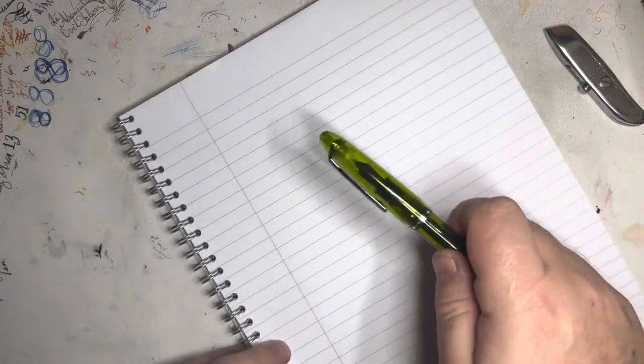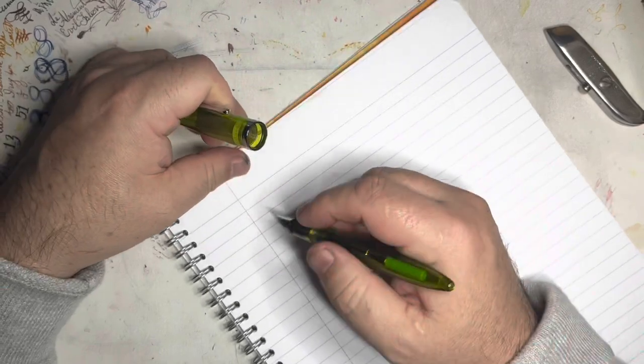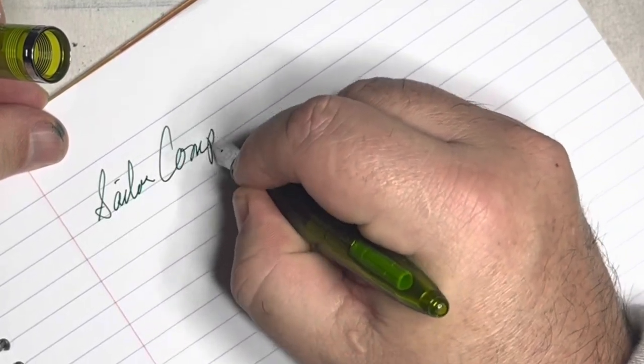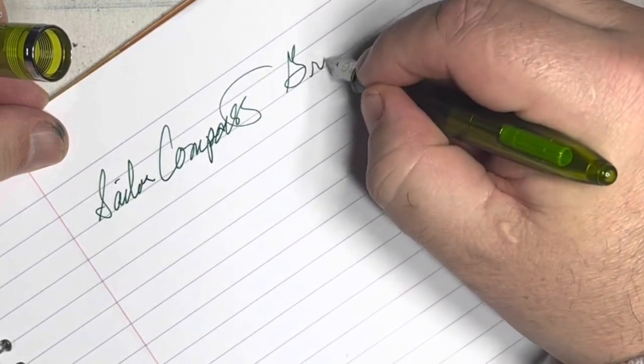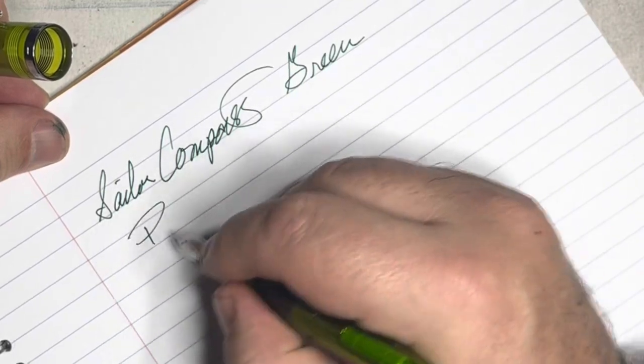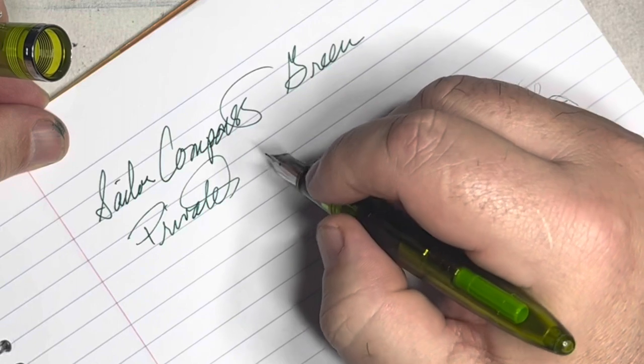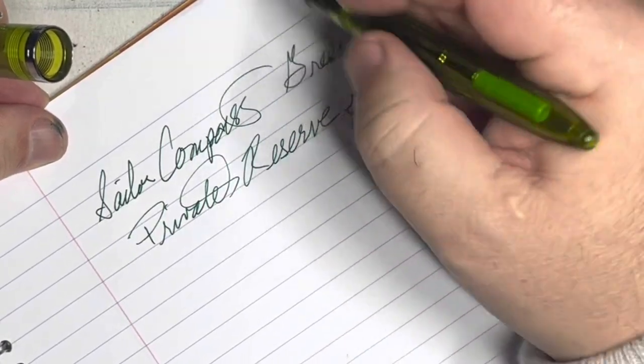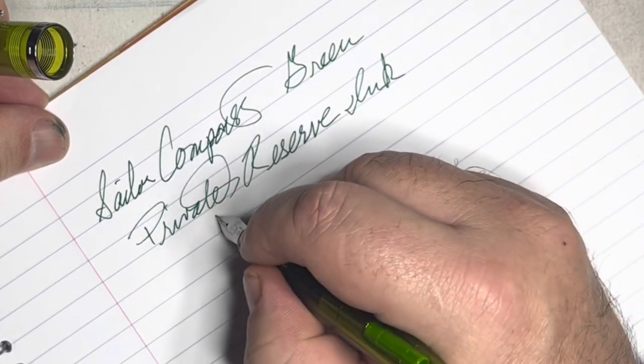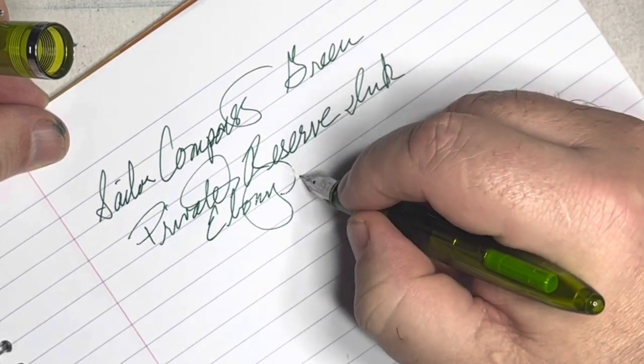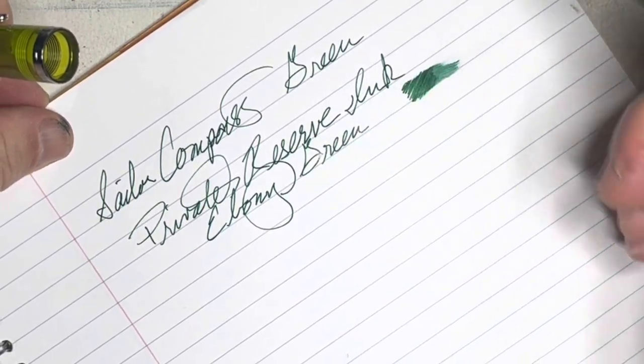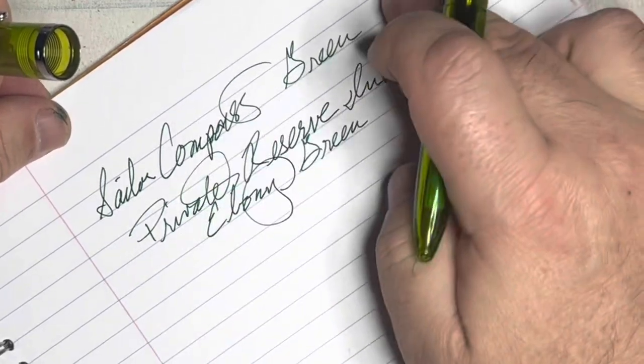Is this better paper? This is definitely better paper. This is Claire Fontaine. This is Claire Fontaine coated paper. So, let's try that again. This is the Compass. And the color is green. I got this from Goulet pens. This ebony green. And again, the ink dries very quickly. I can't get any of this to move. Which is cool.